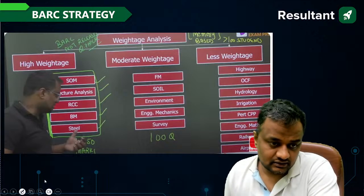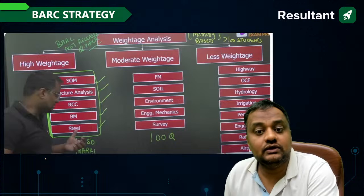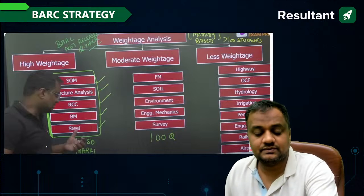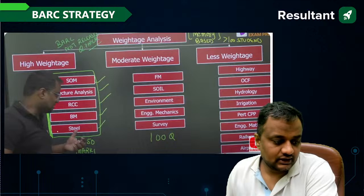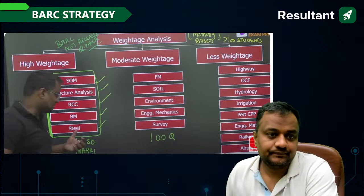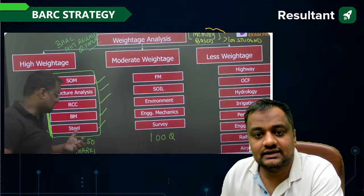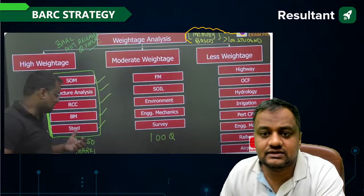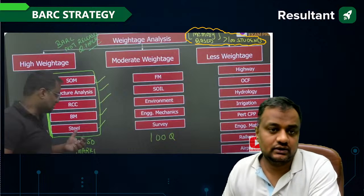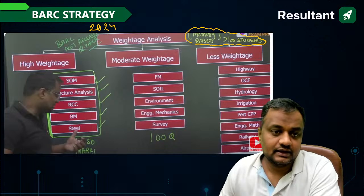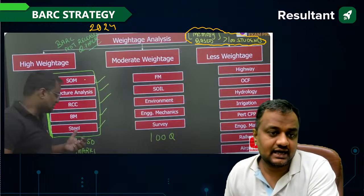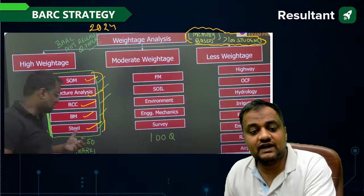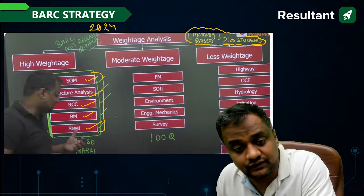Since BARC does not release the paper or response key, no one has access to their previous papers officially. However, last year our team did a crowd-sourced analysis via Google Sheet with more than 100 students. What we found for 2024 is that the highest-weightage subjects were structures, RCC, building materials, and steel — more than 50 marks worth of questions came from just these five subjects.